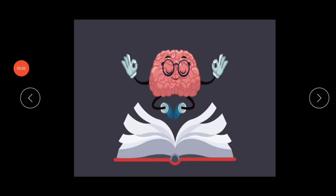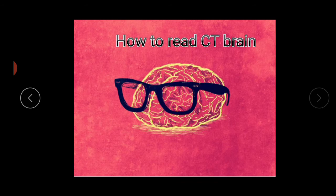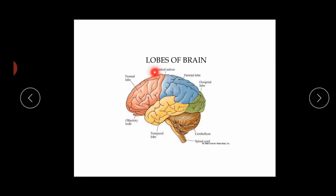Hello friends, welcome to Brain Scoop channel. This is my new video and our today's topic is how to read CT brain. Firstly, we will talk about the lobes of the brain: the frontal lobe, the parietal lobe, occipital lobe, temporal lobe, the olfactory bulb, and between the frontal and the parietal lobe there is the central sulcus.